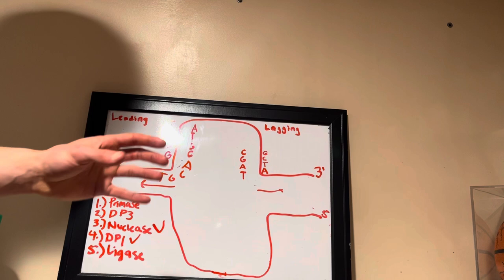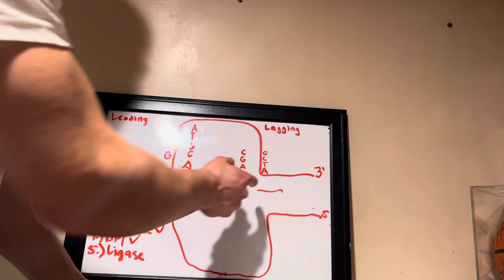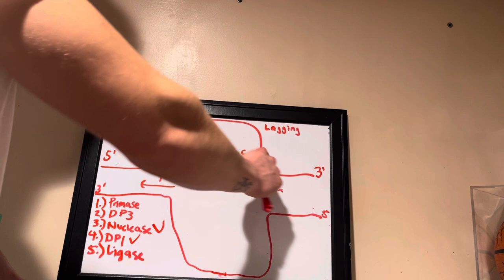On the lagging strand there will be what we call Okazaki fragments. These little short strands are the short strands of DNA nucleotides that the DNA polymerase 3 put down that aren't tied together yet. Ligase is going to come in and tie in, especially those Okazaki fragments, to make a clean replicated strand of DNA.